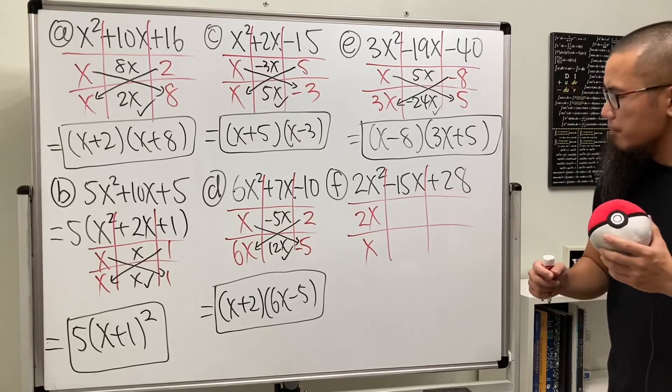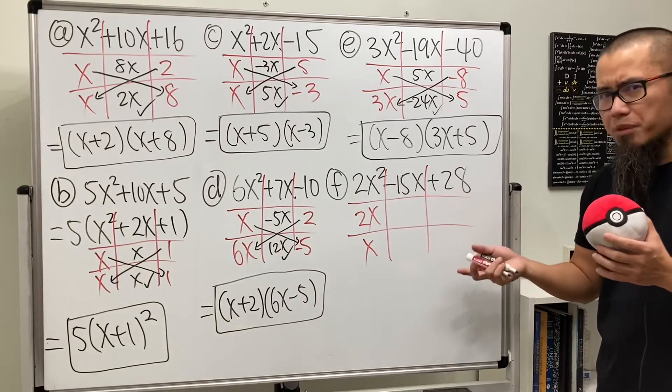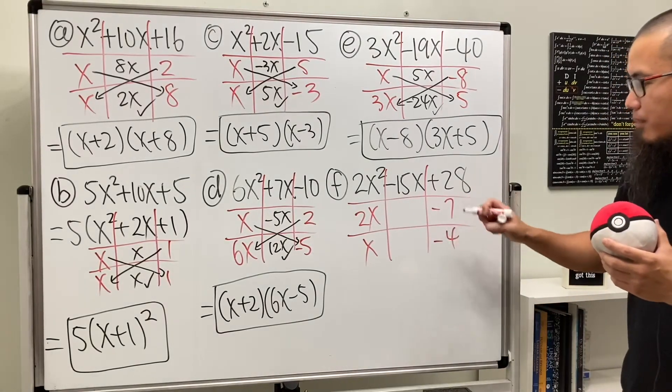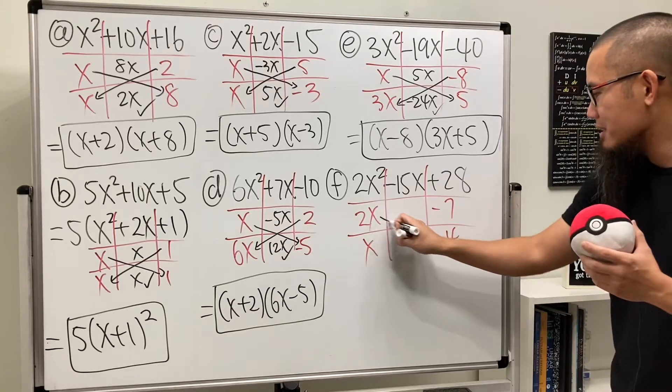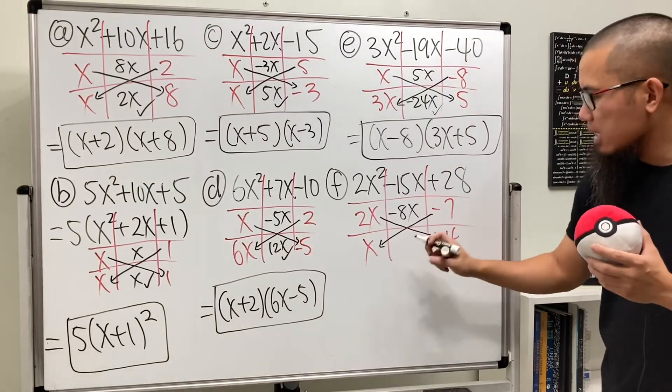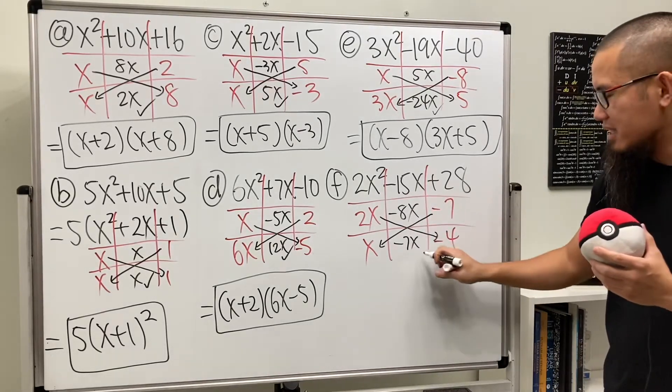Let's tag this one. Maybe 4 and 7. And because right here it's negative, the 4 and 7 should both be negative. And let's put down negative 4 here and negative 7 here. Does it work? Of course. You see, this times this gives us negative 8x. This times that gives us negative 7x. Negative 15x. Done.